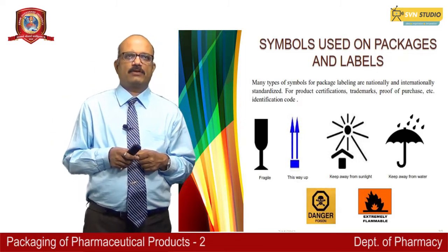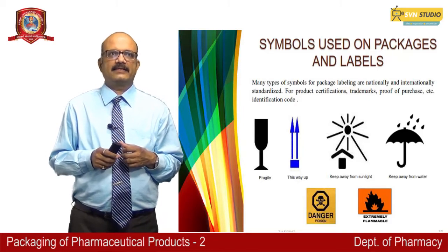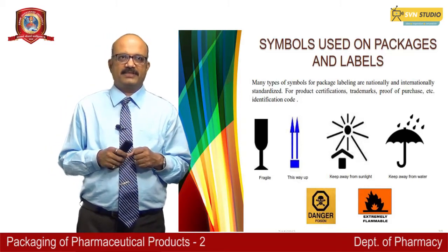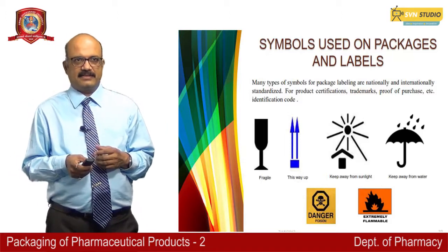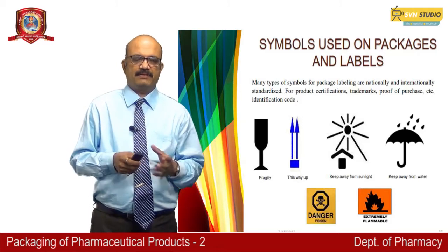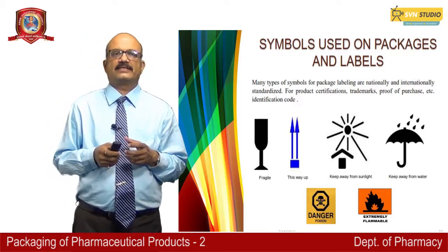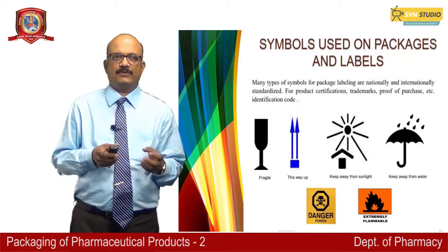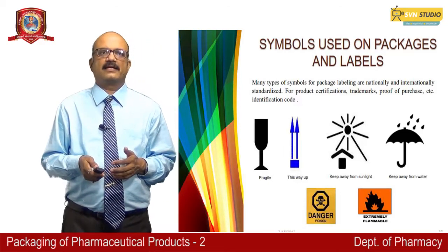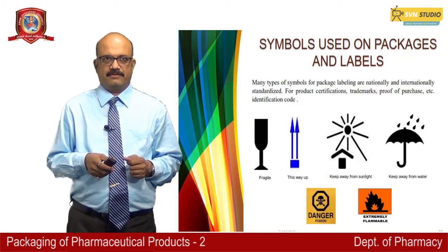Various symbols are used on packages and labels. Many types of symbols for package labeling are nationally and internationally standardized for product certification, trademark, or proof of purchase. Examples include symbols indicating fragile content or correct orientation such as 'this way up'. These symbols help consumers and handlers understand the properties of the product packed inside. Thank you very much for your patience in listening.